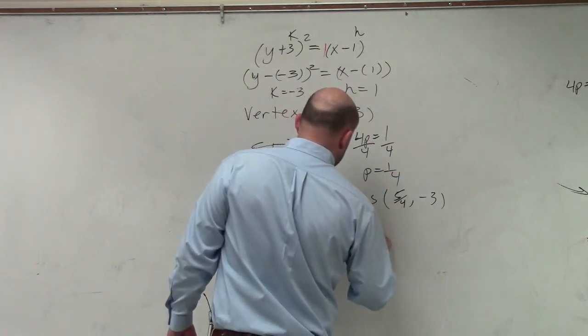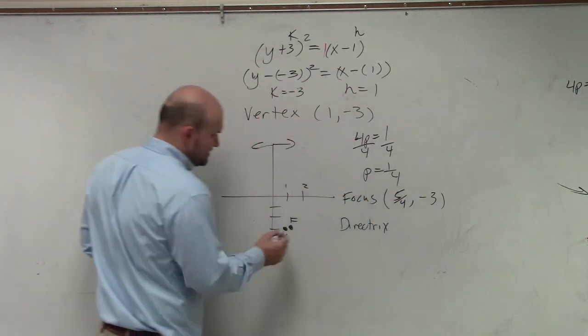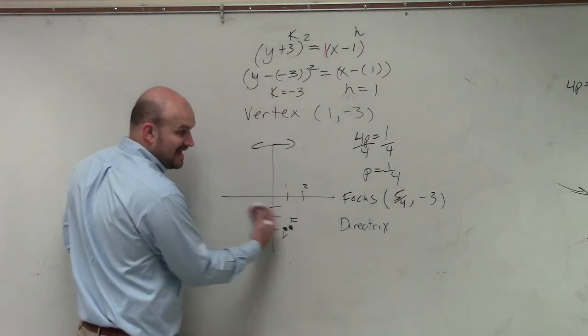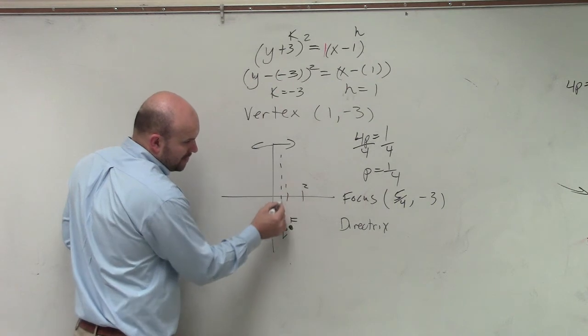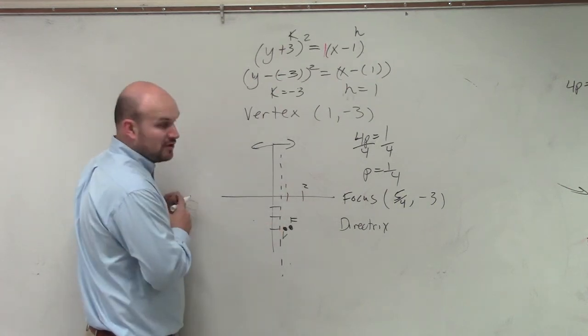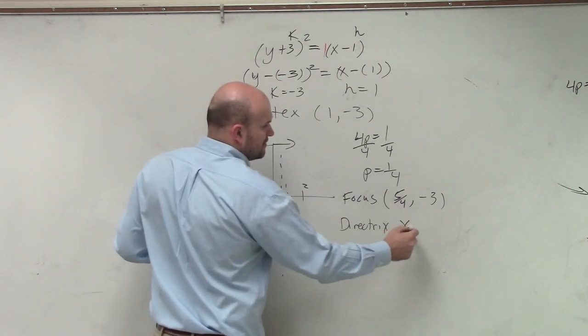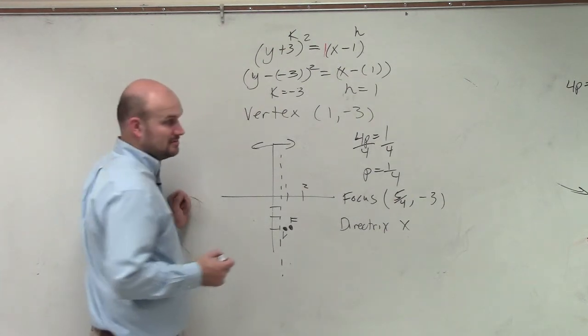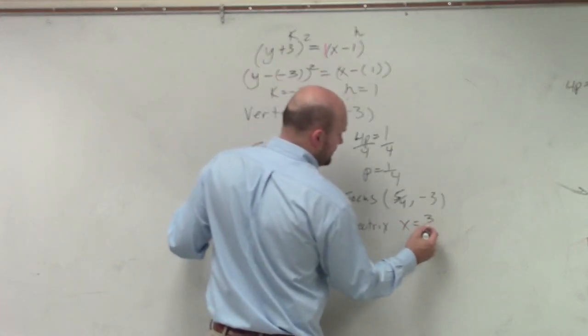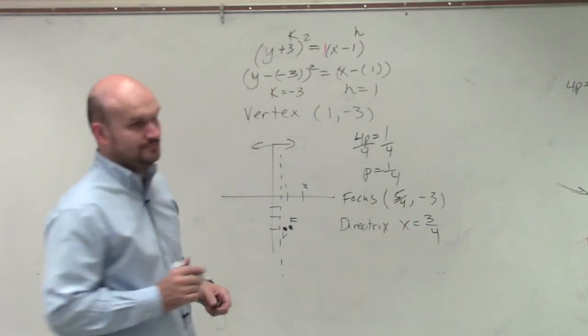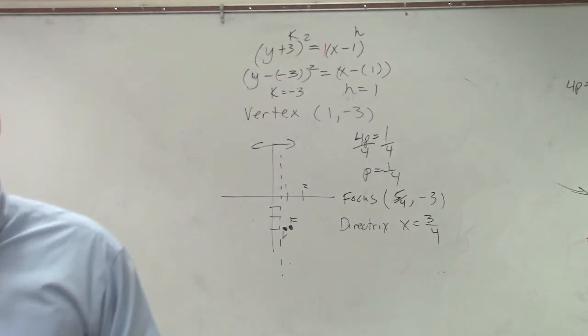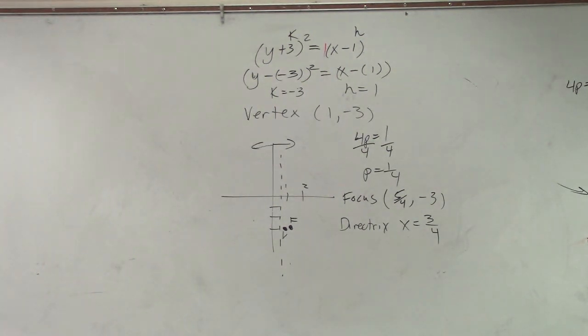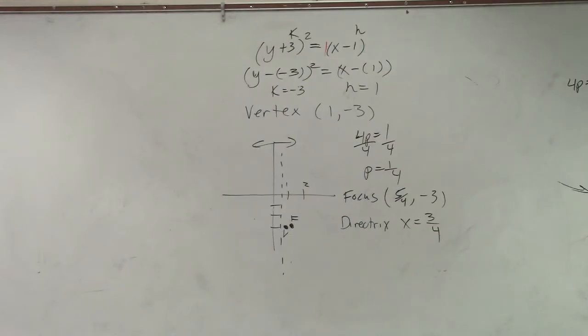And then my directrix is going to be p the opposite way. So if you have 4 fourths minus 1 fourth, you're at 3 fourths. And there you go.